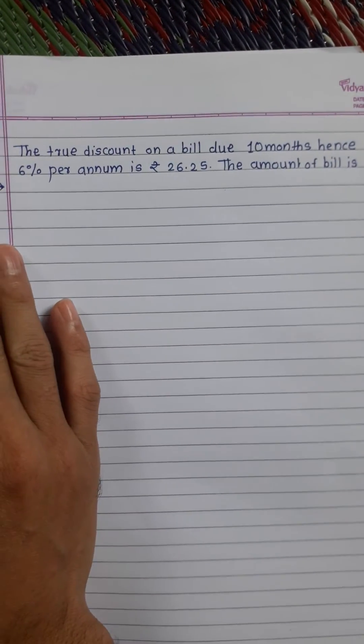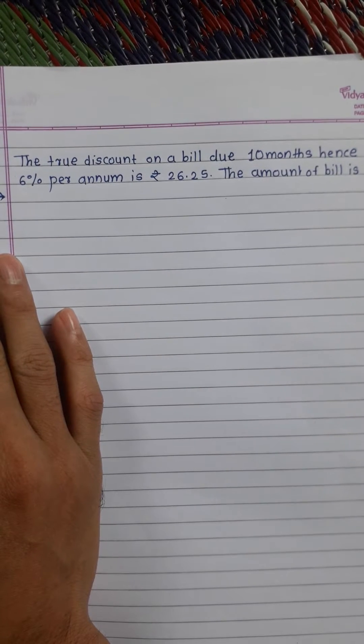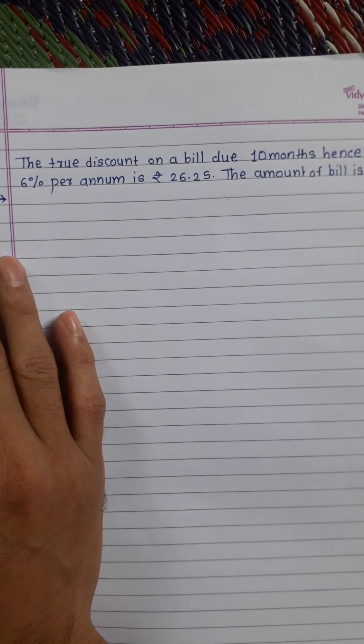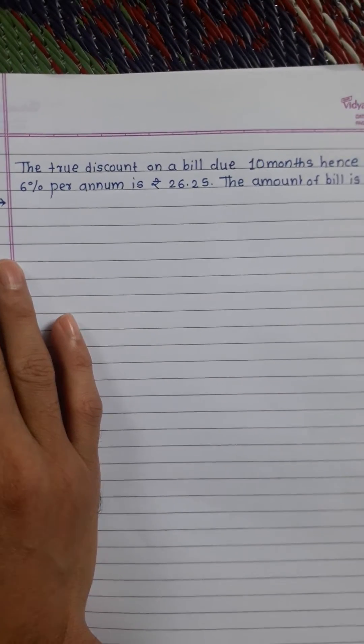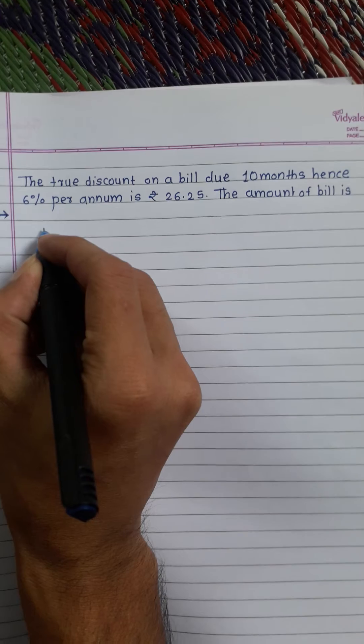Dear friends, today we will solve this question: the true discount on a bill due 10 months hence at 6% per annum is rupees 26.25. The amount of the bill is what we need to find. Here we will consider that suppose true value of bill is equal to 100 rupees.